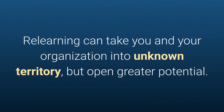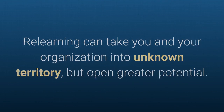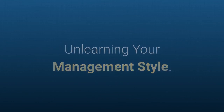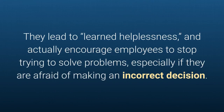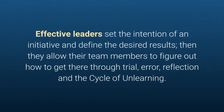Unlearning your management style: command-and-control and micromanaging leadership limits organizational potential. They lead to learned helplessness and actually encourage employees to stop trying to solve problems, especially if they fear making an incorrect decision. Effective leaders set the intention of an initiative and define the desired results, then allow their team members to figure out how to get there through trial, error, reflection, and the cycle of unlearning.